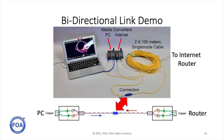For our first demo we want to see how a bidirectional link works. We connected a PC to one of our media converters and our internet router to the other media converter, then connected the two media converters with fiber optic cables. We used two cables with a connection in the center, because that's where we'll do our next demo.